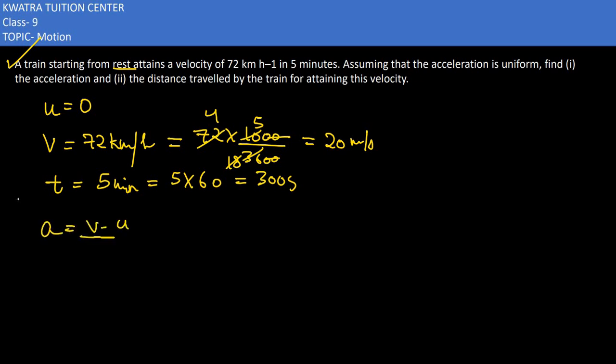Now what we have to find in the first case is acceleration, which is V minus U over T. V we have converted already to 20 meter per second, U is 0, T is 300. So 20 over 300. Cancelling we get 2 over 30, which becomes 1 by 15 meter per second squared.